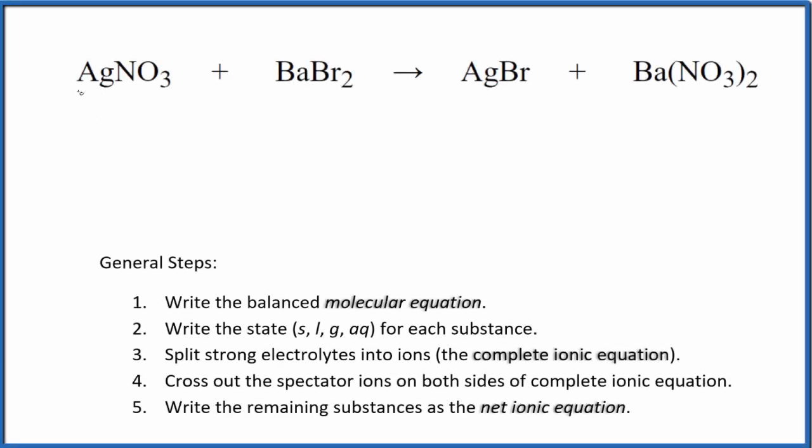Let's write the balanced net ionic equation for silver nitrate plus barium bromide. The first thing we do with net ionic equations is balance the molecular equation. I can see there are two nitrates here and only one there, so let's put a two in front of the silver nitrate.